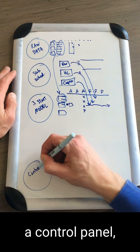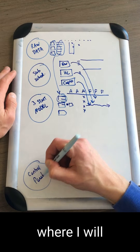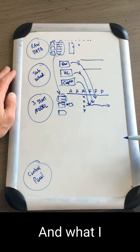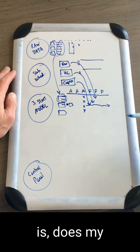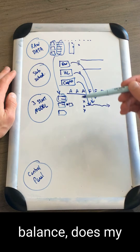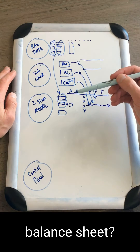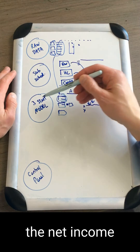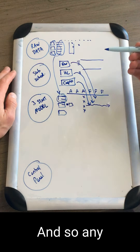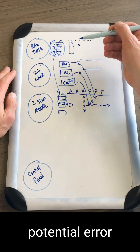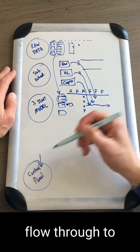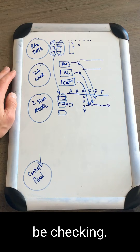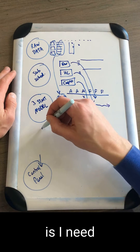Because my model is already getting complicated, I'm going to build a control panel. This is where I'll enter date changes, but more importantly where I'll check for errors — does my balance sheet balance, does my statement of cash flows match the balance sheet, does the net income from my raw data match the net income in my three statement model? Any potential error that can pop up is going to flow through to here.